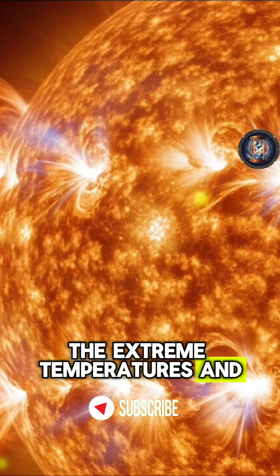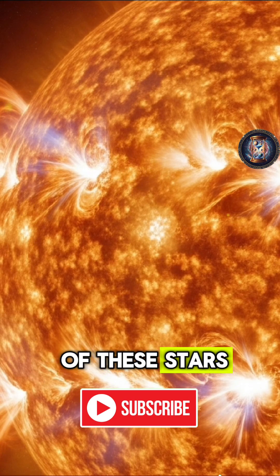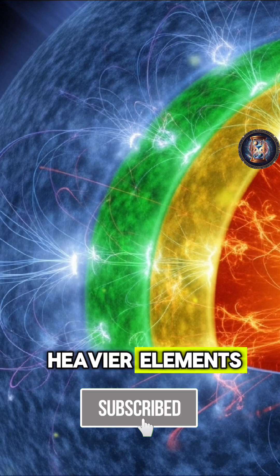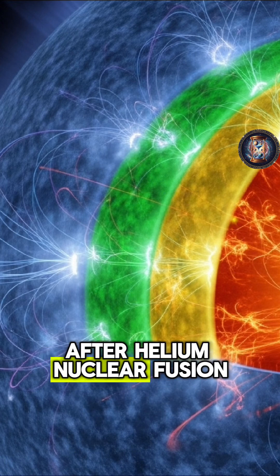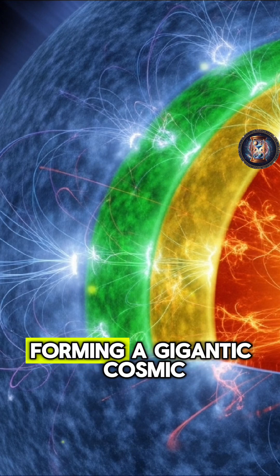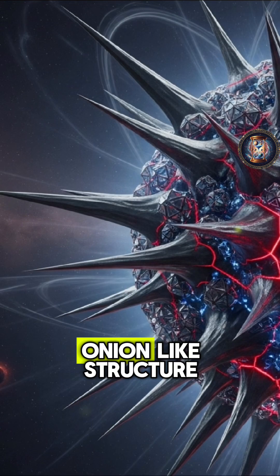The extreme temperatures and pressures in the cores of these stars allow them to fuse heavier elements after helium. Nuclear fusion occurs in layers, forming a gigantic cosmic onion-like structure.